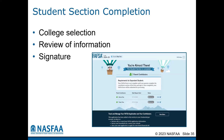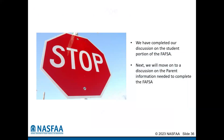Finally, the student is going to be asked to do a review of their information. It is important that the student reviews the accuracy of the information to try to mitigate the chances that additional information may be requested by their chosen school. After the information has been reviewed, the student will simply sign and submit, completing the student section of the FAFSA. Once the student signs and submits, the FAFSA will then send an invite to their identified contributors, asking them to log in and initiate their process.